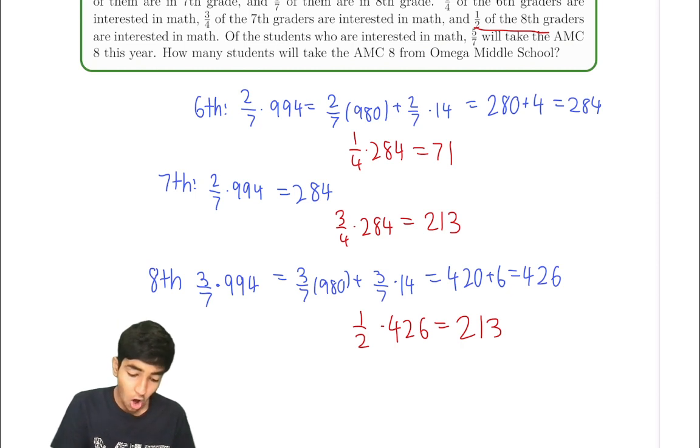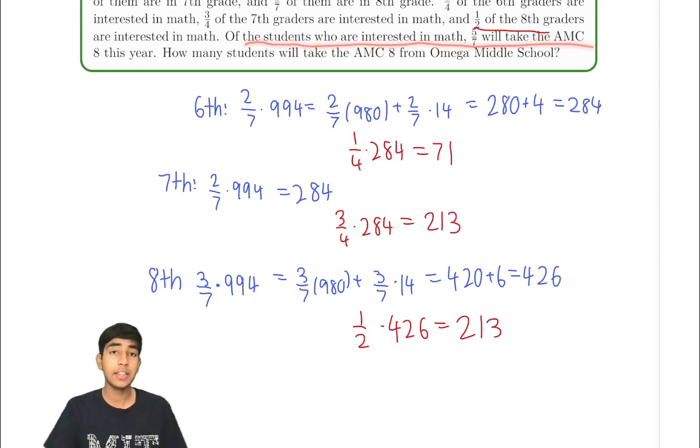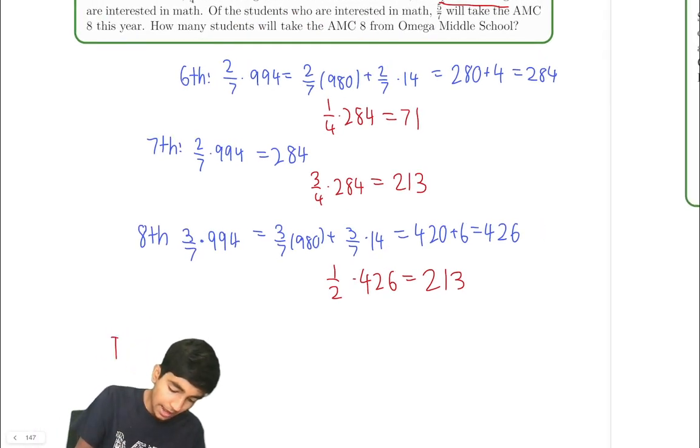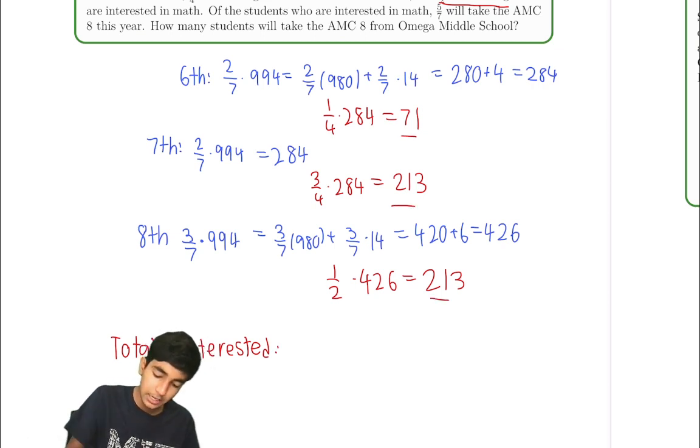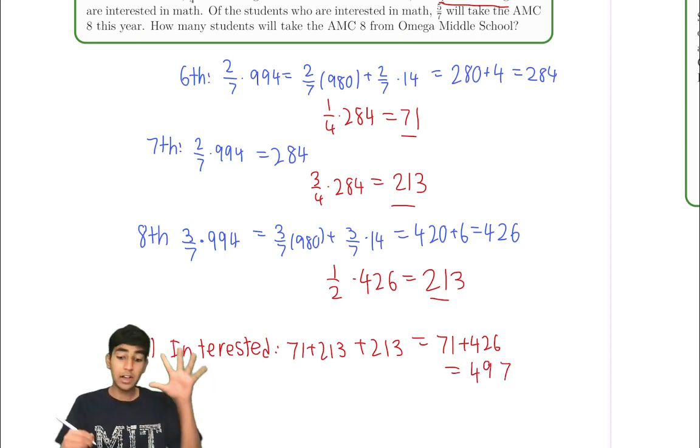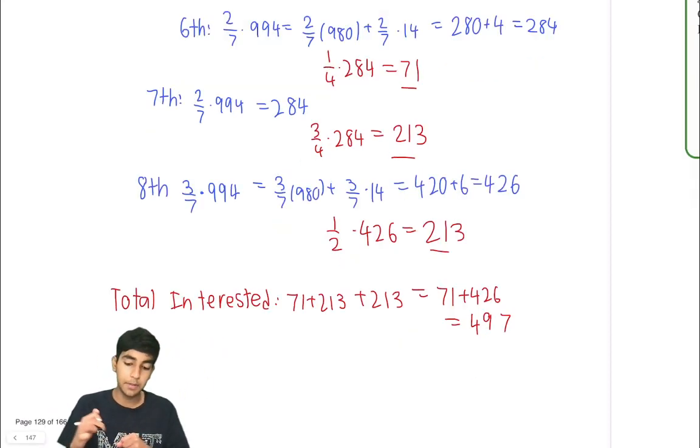And of all the students who are interested in math, five sevenths are going to take the AMC 8. So how many are there? Well, first of all, total interested in math is just 71 plus 213 plus 213. And we can just add this up. 71 plus 426. That's 497.